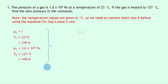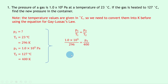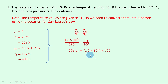Writing down our relationship for Gay-Lussac's law, we have P1 over T1 equals P2 over T2. Substituting in the numbers gives us 1.0 times 10 to the 5 divided by 296 equals P2 over 400. To get P2 on its own, we cross multiply — the bottom left times the top right equals the top left times the bottom right — giving us 296 P2 equals 1.0 times 10 to the 5 times 400. Doing the right-hand side in your calculator and dividing by 296 gives us P2 equals 1.35 times 10 to the 5 pascals.